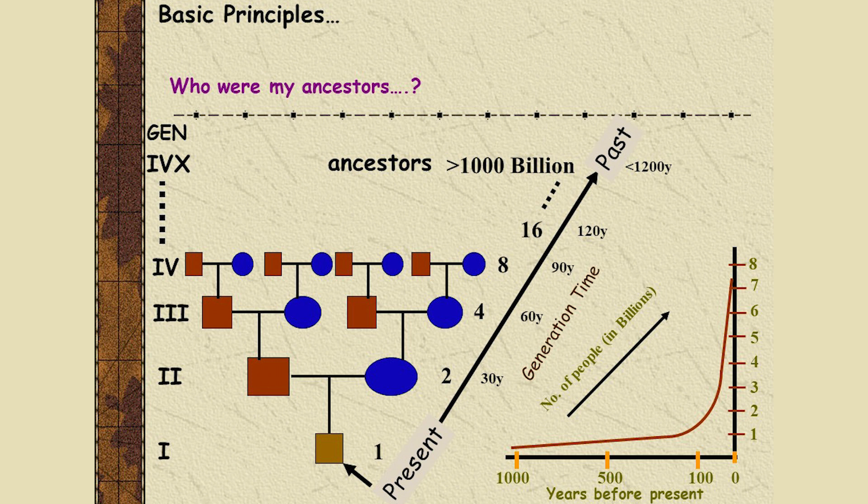I have two parents and then they have their parents, and if we step back around 40 generations, we would all be having an enormous number of ancestors if we take each individual separately — but we all know that is not the case, meaning we all share common ancestors. I am trying to build my story with DNA.